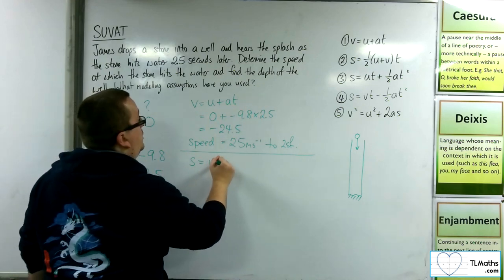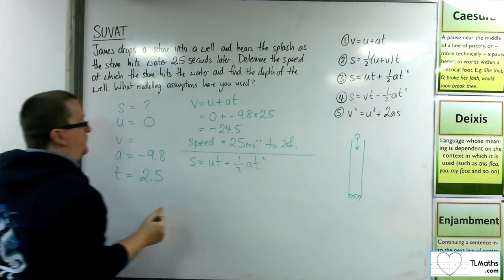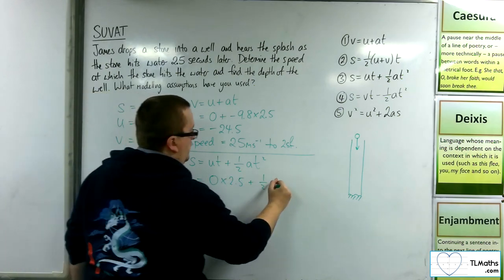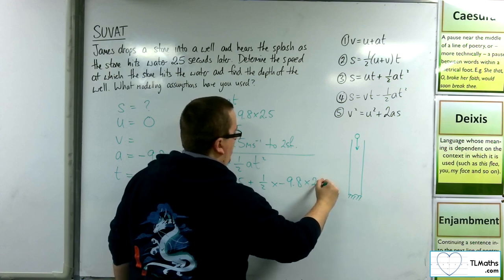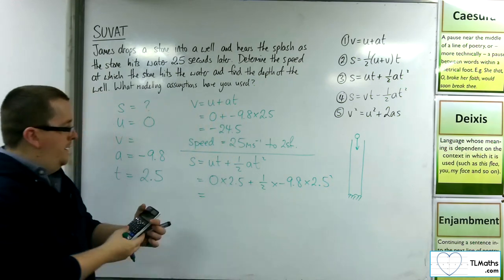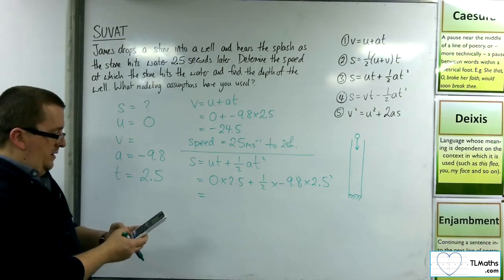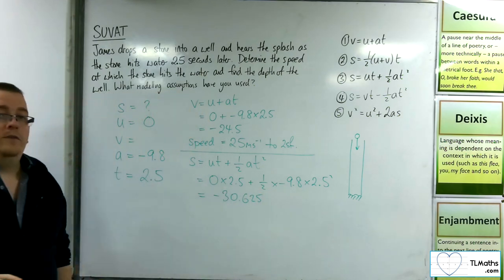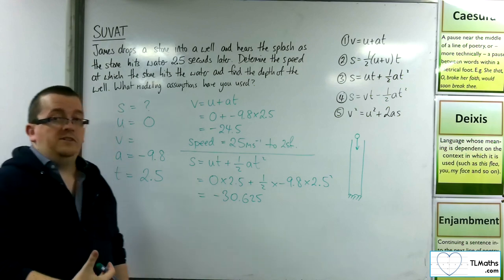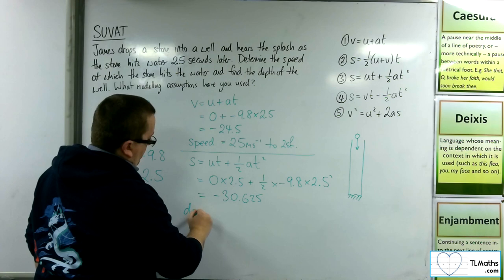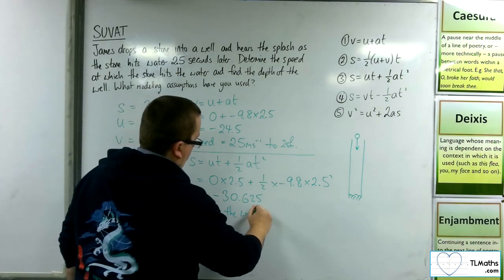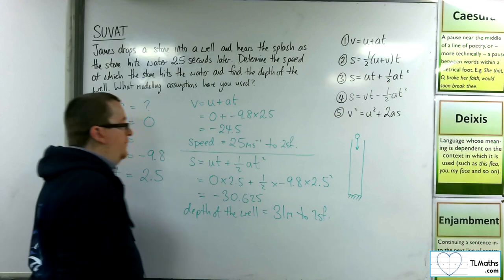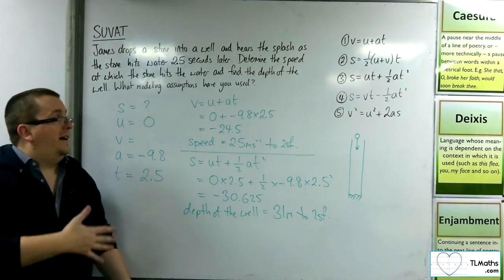So S is equal to UT plus 1 half AT squared. So that's equal to 0 times T, so 0 times 2.5, plus 1 half times minus 9.8 times T squared. So we've got minus 0.5 times 9.8 times 2.5 squared, which is minus 30.625. Now this is in metres and that is the displacement of the stone. So the depth of the well is actually equal to 31 metres to two significant figures. And so that is how we can solve this problem.